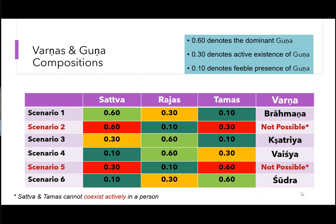Scenario 5 is not possible because the dominant and the next dominant are non-contiguous. Finally, the last scenario is possible because the dominant and the next dominant are contiguous. There, Tamas is very high and Rajas is the next — Tamas pushes Rajas a little bit down, and Sattva is very, very insignificant. This is how the four definitions are.